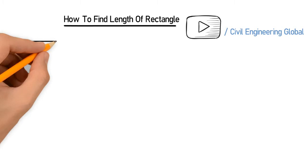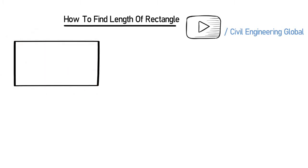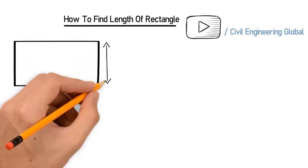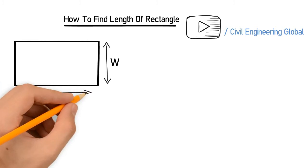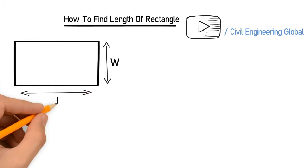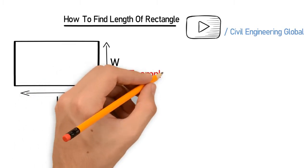First, let's draw a rectangle. This is the width, this is the length. So in this example, we have the data: area is equal to 500 meter square.